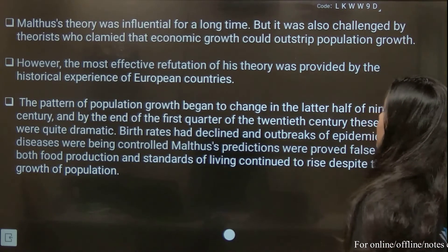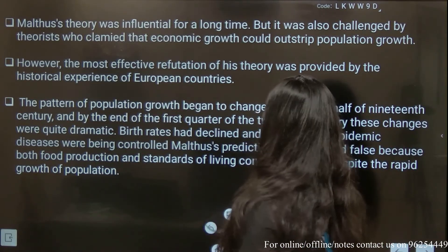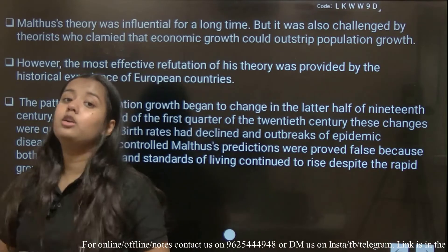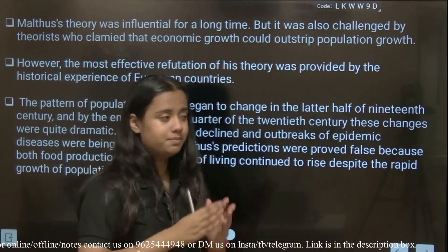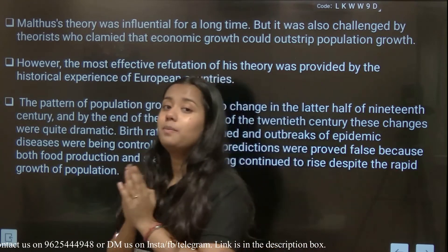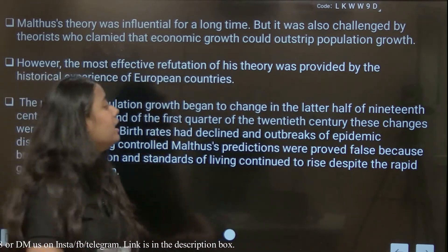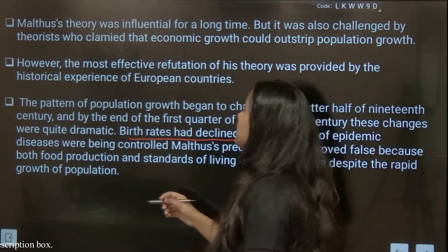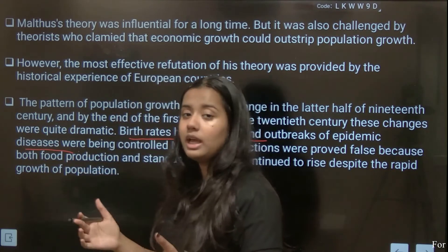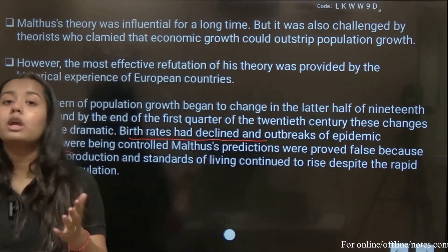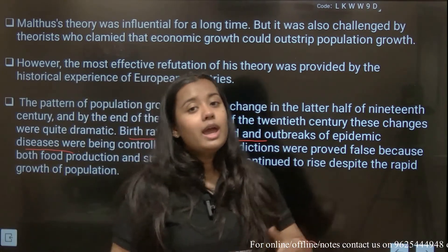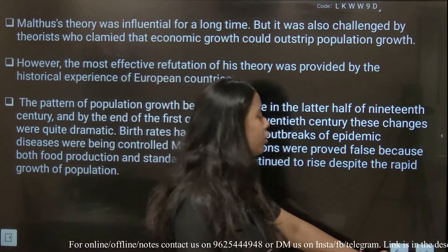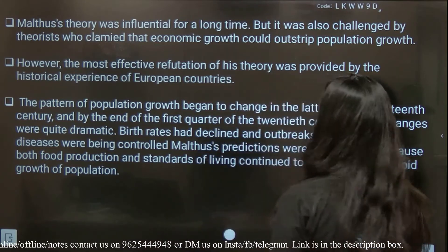Malthus's theory was influential for a long time and people accepted it. But after a period of time, people began to argue against it. They said that declining the birth rate is a better approach, so that epidemic diseases and famines don't need to happen. Eventually, Malthus was criticized.